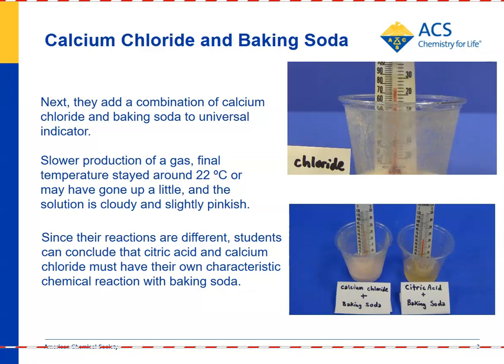When students look at the results side by side, they see that the calcium chloride and baking soda in indicator solution ended up a very light pink and cloudy looking, with a slight increase in temperature. The citric acid and baking soda ended up more clear, more yellow, and with a decrease in temperature. They see that substances interact and react chemically in characteristic ways.